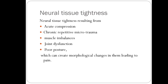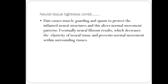Neural tissue tightness results from acute compression, chronic repetitive micro trauma, muscle imbalance, joint dysfunction, and poor posture, which can create morphological changes due to pain. Pain causes muscle guarding and spasm to protect the inflamed neural structures. This alters the normal movement pattern; eventually neural fibrosis results, which decreases the elasticity of neural tissue and prevents normal movement within surrounding tissue.